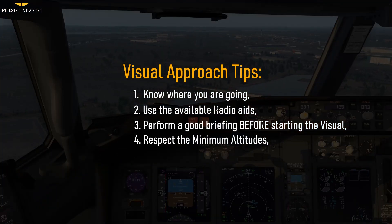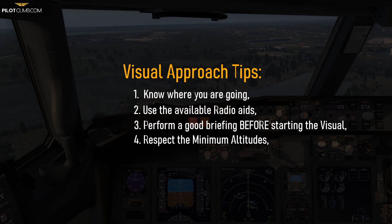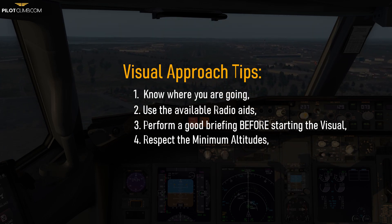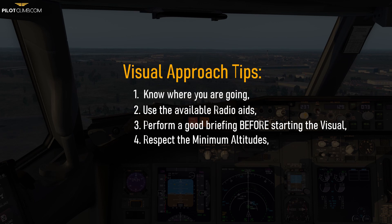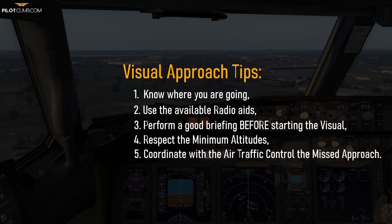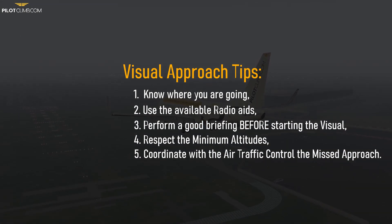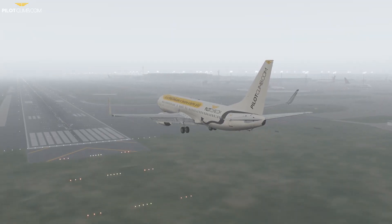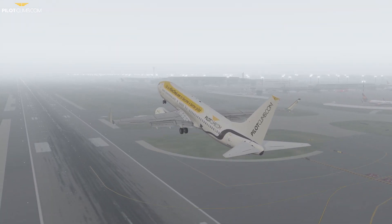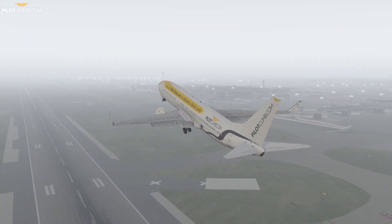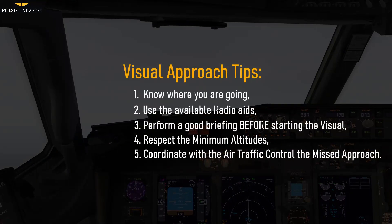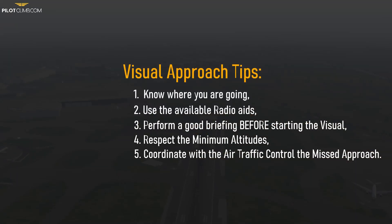Fourth, even if you are proceeding visually, make sure you are respecting the minimum altitude, especially when overflying populated areas. Fifth, coordinate with air traffic control the missed approach procedure, just in case you need it. I've seen many cases where people started the visual approach unprepared, arrived on final in a high-energy situation, performed a go-around, and didn't know what to do — ending up with a level bust because they were not aware of the missed approach altitude.